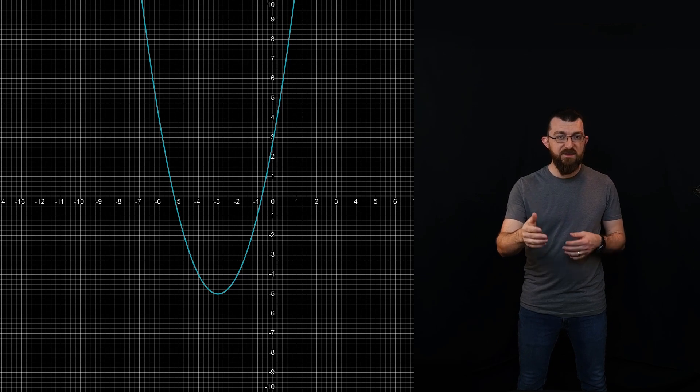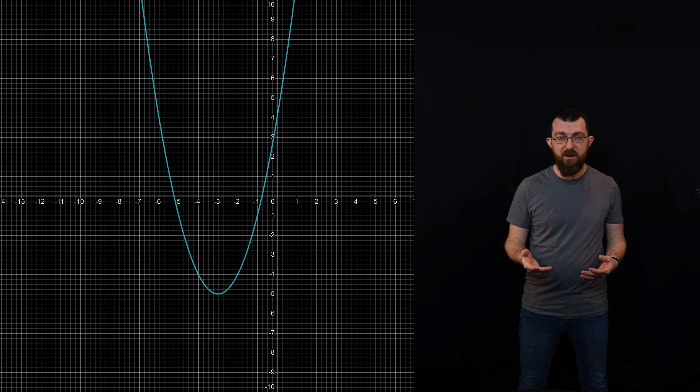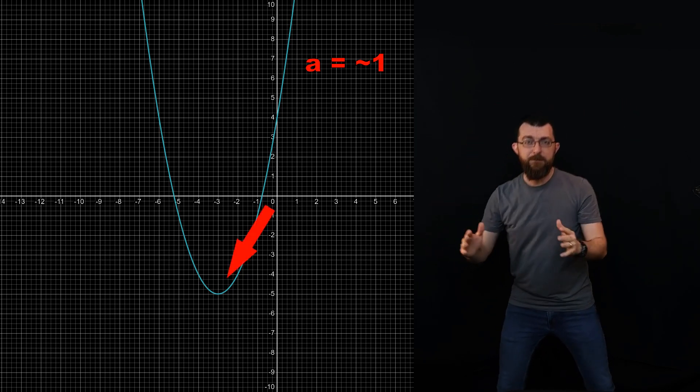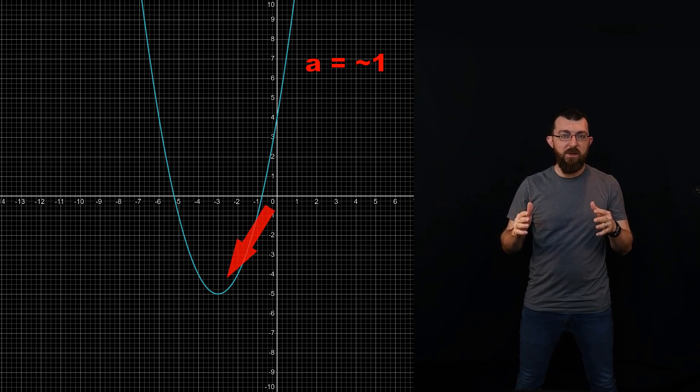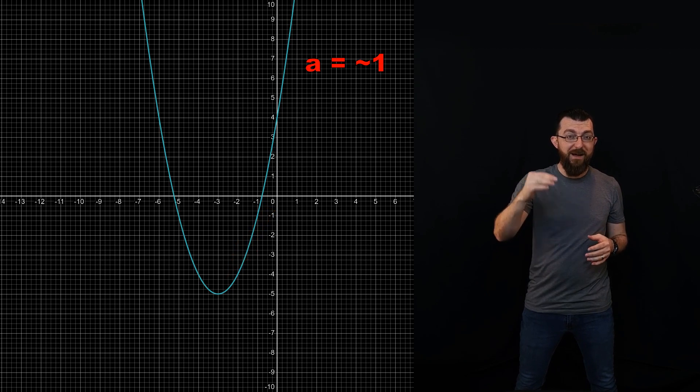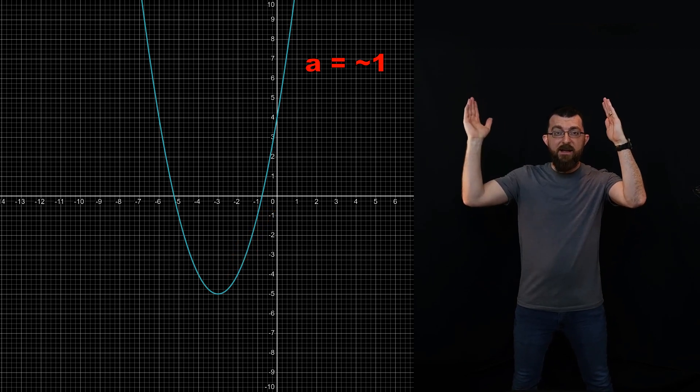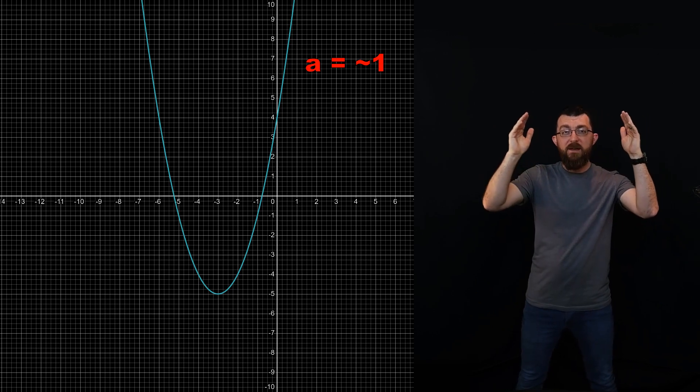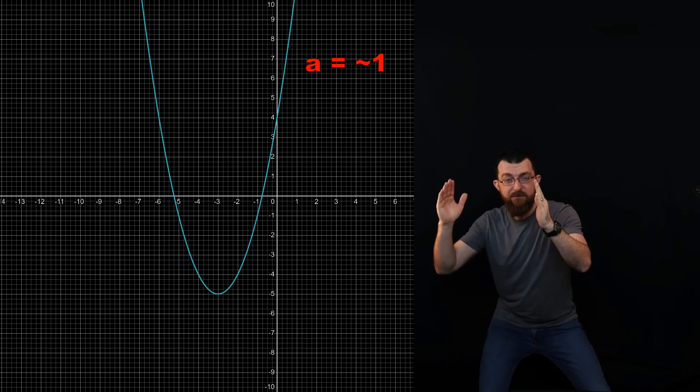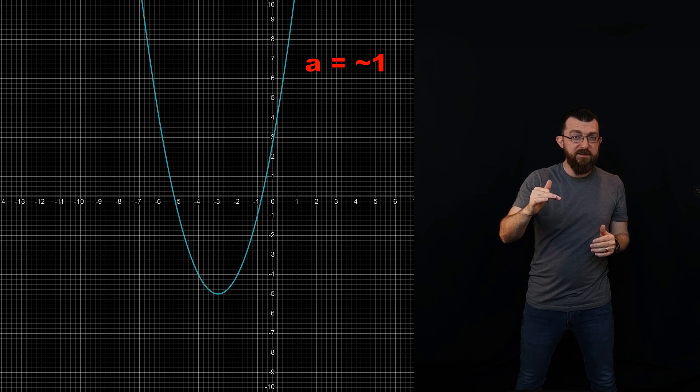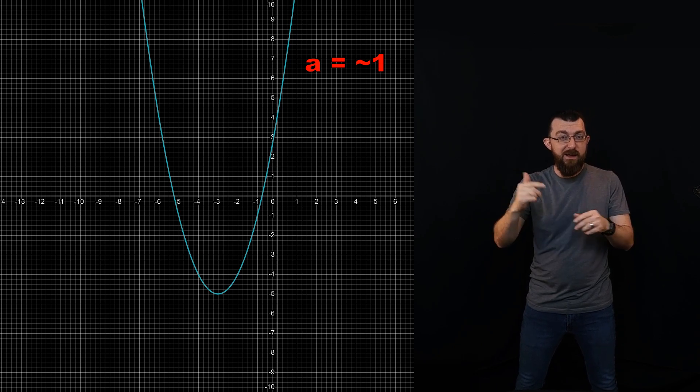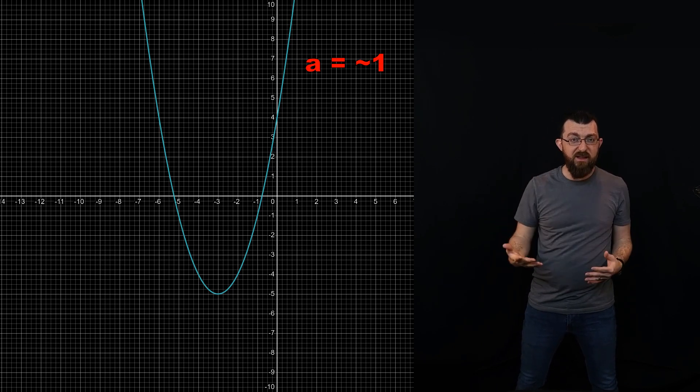This parabola has the same shape and orientation as a regular y equals x squared parabola. So the leading coefficient A is still probably 1. However, it has been translated down and to the left. That is what happens when you adjust the value of B in the positive direction. When B is negative, it goes down and to the right. But when B is positive, it goes down and to the left.